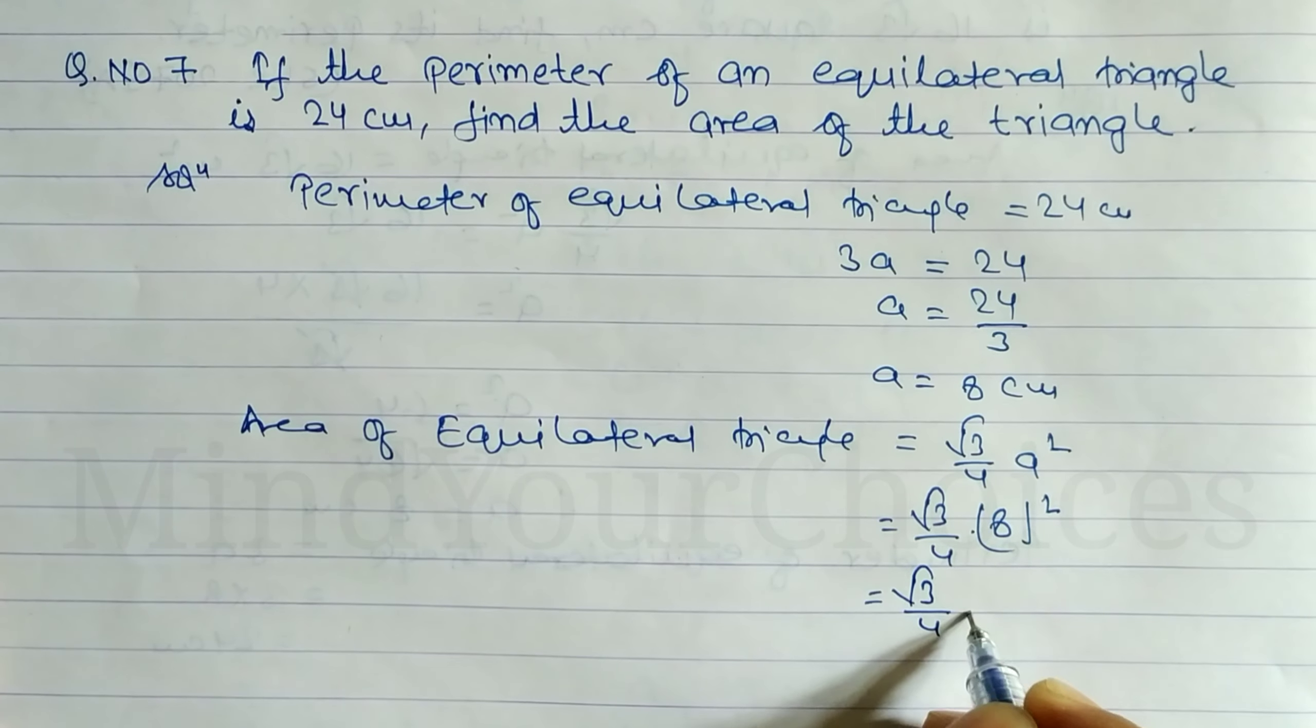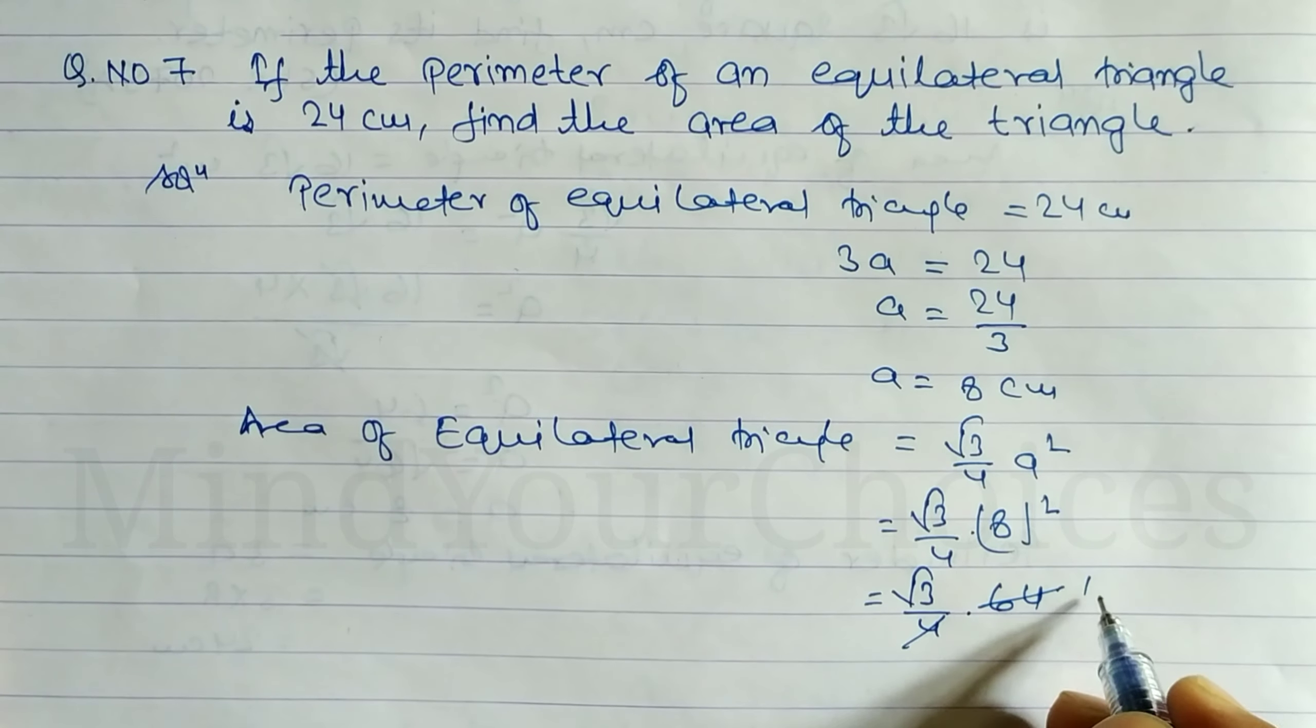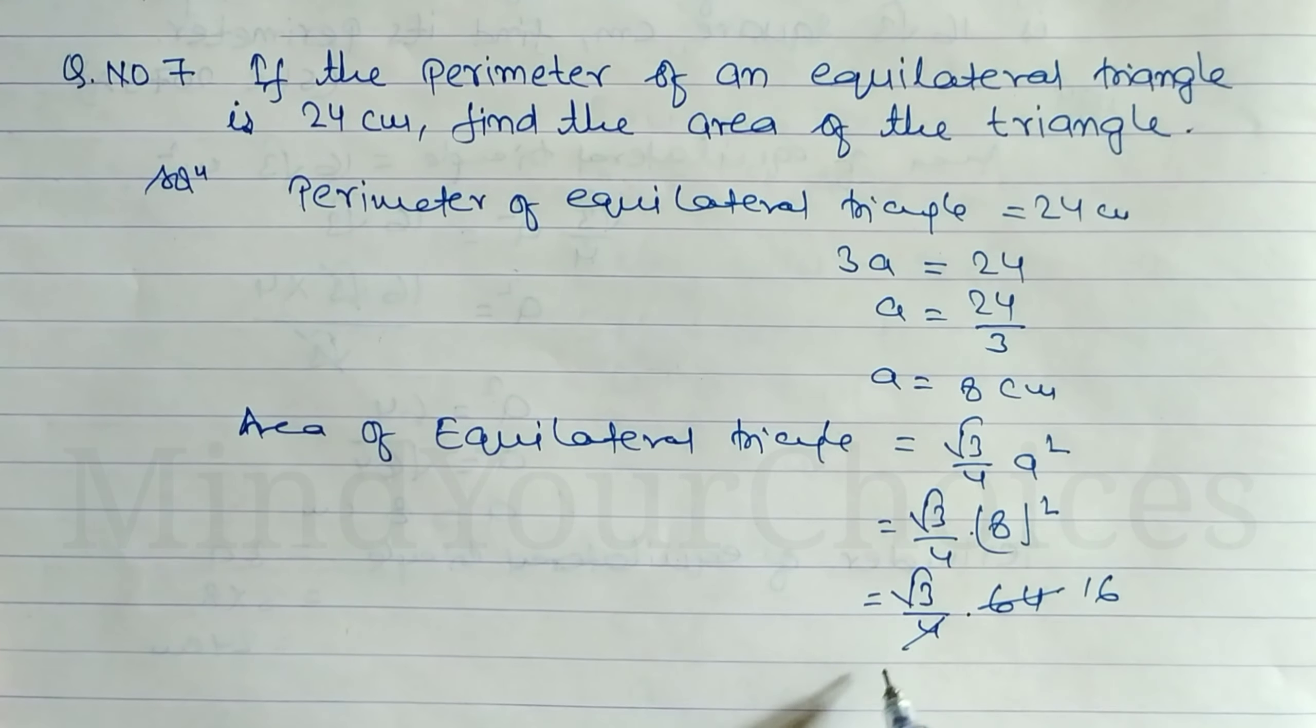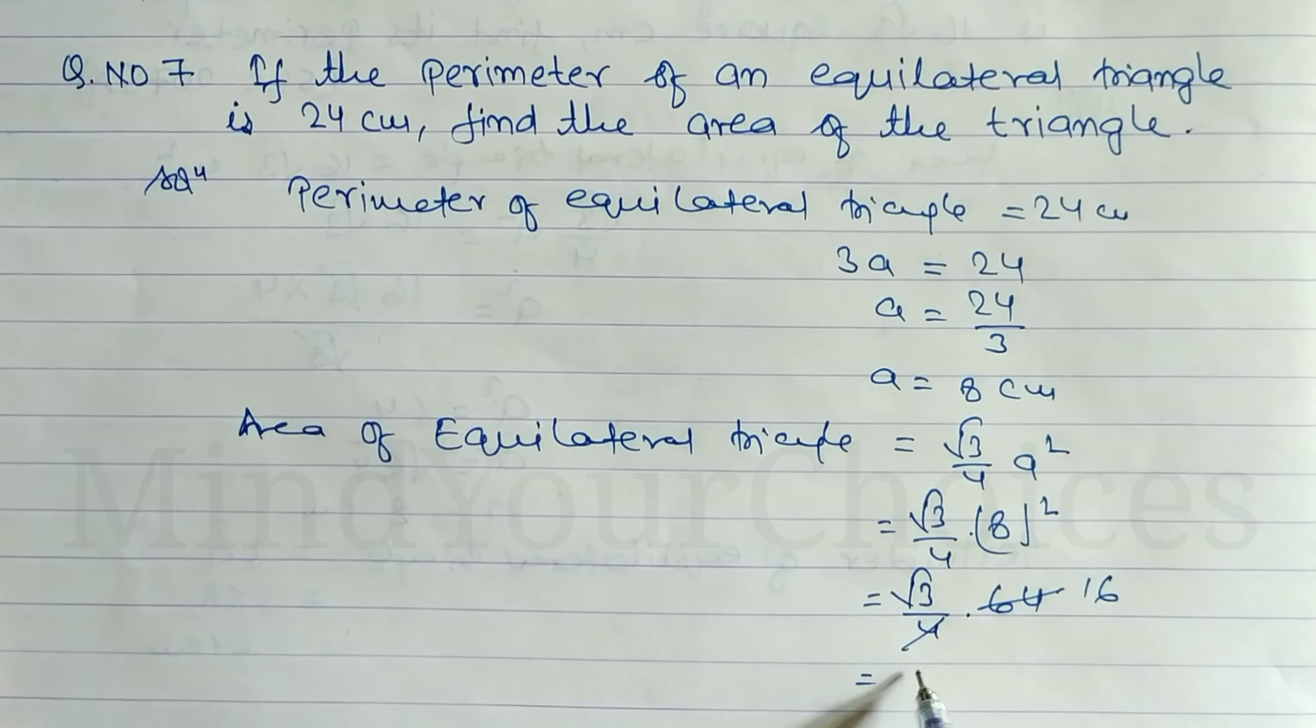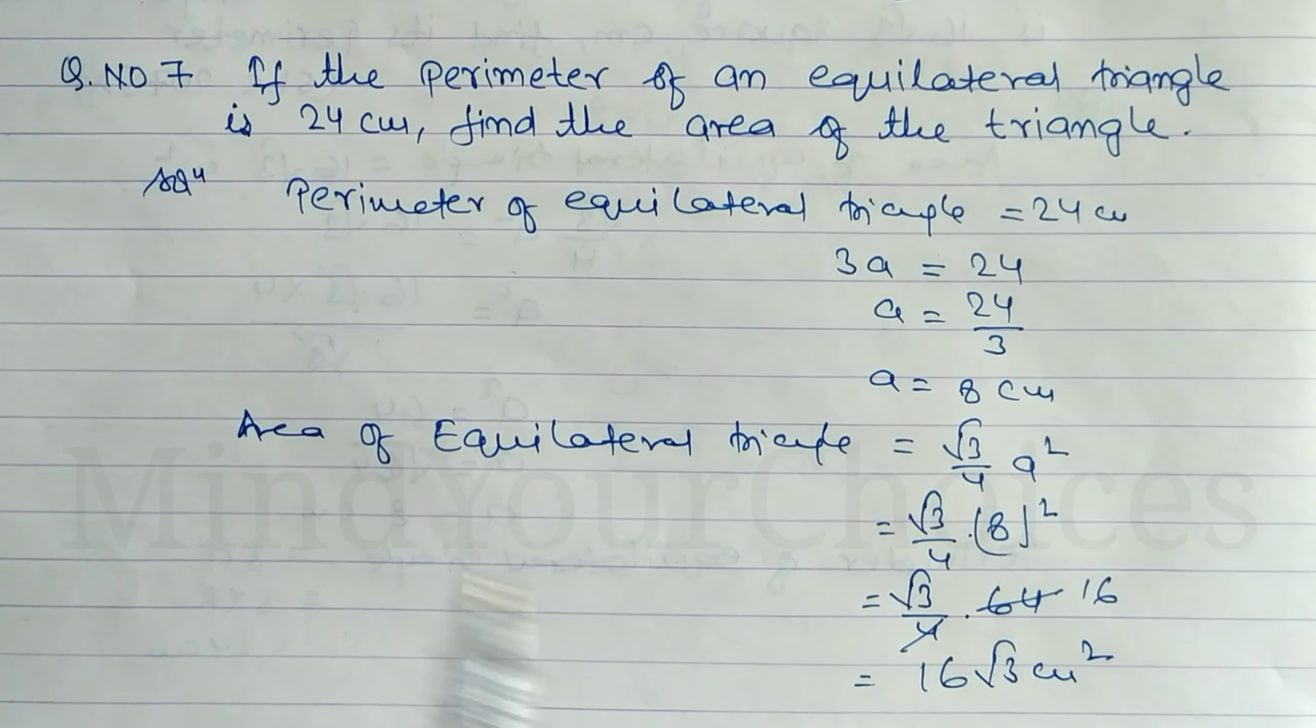Root 3 by 4 into 64. Now we have to cancel this 4. 1 times 4 is 4, 6 times 4 is 24. So just multiply, 16 into root 3 is 16 root under 3 cm square.